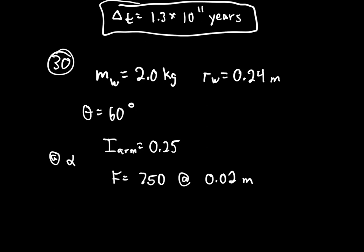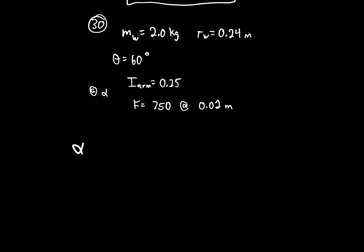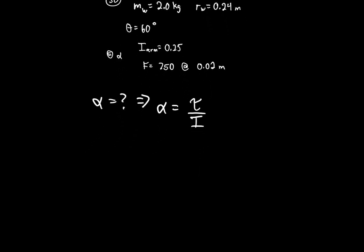All the information: mass of the weight is 2 kilograms, distance from pivot is 0.24 meters, arm angle is 60 degrees, moment of inertia of arm is 0.25, force applied is 750 newtons at lever arm 0.02 meters. We need to find alpha using alpha equals torque over moment of inertia, where torque equals F times R.